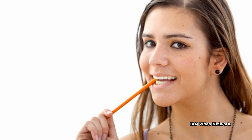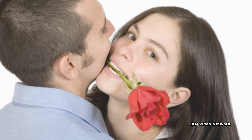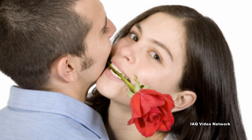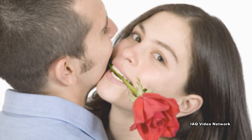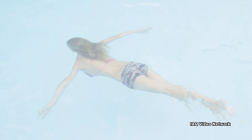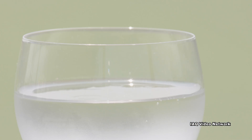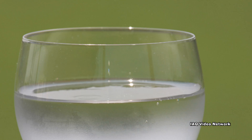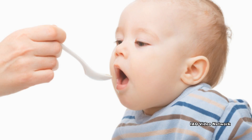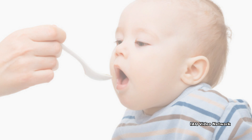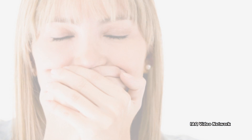Crypto can be spread by putting something in your mouth or accidentally swallowing something that has come into contact with waste infected with Crypto, by swallowing recreational water contaminated with Crypto, by swallowing contaminated water or beverages, by eating uncooked food contaminated with Crypto, or by touching your mouth with contaminated hands.